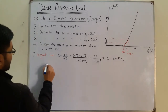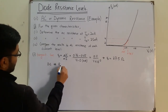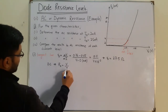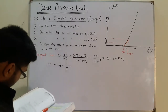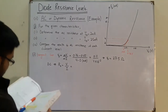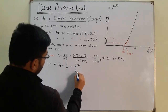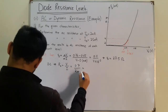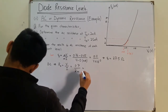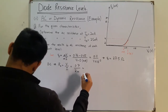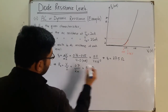Now we also have to find the DC resistance at this point. Rd is directly equal to the potential value at this point divided by the current value. The potential value is 0.7 and the current is 2 milliamps, so it is 0.7 divided by 2 milliamperes. This gives a value of 350 ohms — a very large difference.